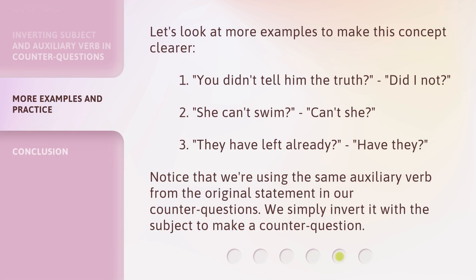Let's look at more examples to make this concept clearer. 1. 'You didn't tell him the truth.' — 'Did I not?' 2. 'She can't swim.' — 'Can't she?' 3. 'They have left already.' — 'Have they?' Notice that we're using the same auxiliary verb from the original statement in our counter questions. We simply invert it with the subject to make a counter question.